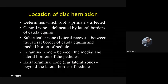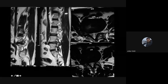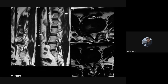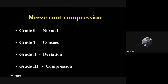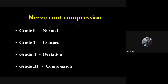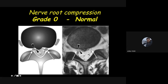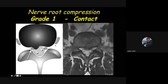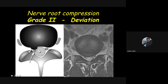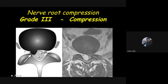A foraminal and extraforaminal disc can cause significant compression of the exiting nerve root — here you can see a large disc exactly in the neural foramen with an additional extraforaminal component compressing the L4 exiting nerve root. Nerve root compression is graded: Grade 0 is normal with fat seen between nerve root and disc; Grade 1 is the disc just touching the nerve root; Grade 2 is minimal displacement of the nerve root; Grade 3 is significant compression or squeezing of the nerve root — the most severe.